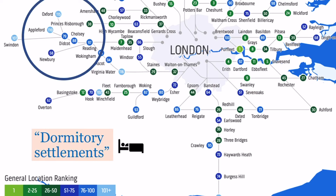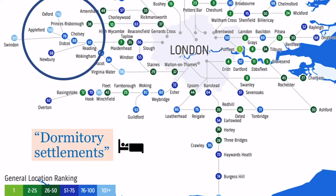A place like Didcot is a really good example of a dormitory settlement — where people sleep but don't actually work. People work in London or Oxford but go and live and sleep in Didcot. That's what we call a dormitory settlement, and that's where people commute from to go to work.